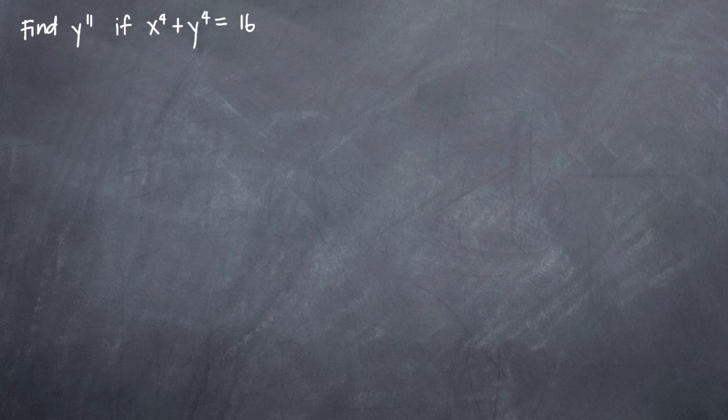In this particular problem, we've been asked to use implicit differentiation to find the second derivative of y, if x to the fourth plus y to the fourth is equal to 16. Remember that whenever we use implicit differentiation, we're differentiating with respect to x, but we're treating y as a function, and every time we take the derivative of y, we have to use chain rule and multiply by the derivative of y, assuming that it's a function.